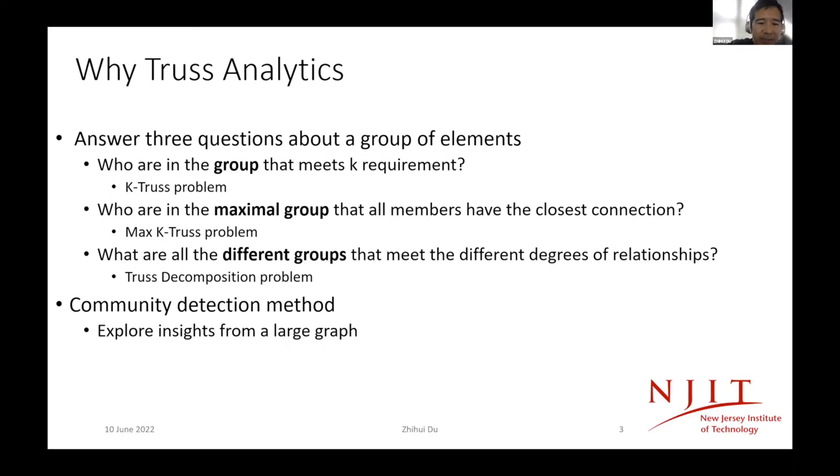And the third question is if we want to know the different kinds of groups with different kinds of relationships, this is a truss decomposition problem. We need to identify all kinds of truss in the graph. Truss can often be used in community detection, and it can help us to get the insight from a very large graph. This is the reason why truss analytics is widely used in large graph analysis.